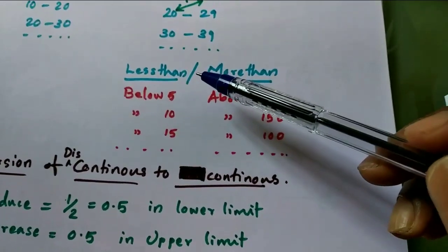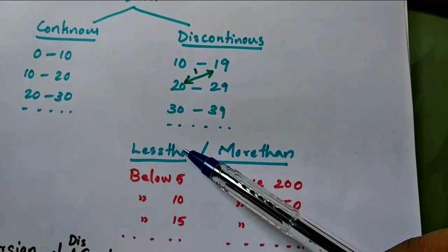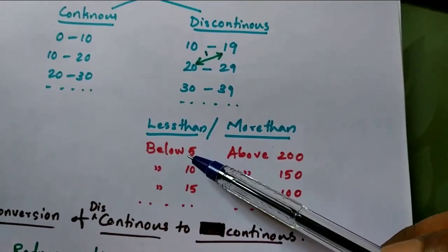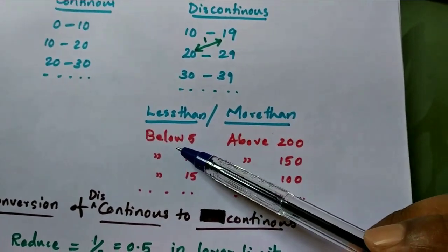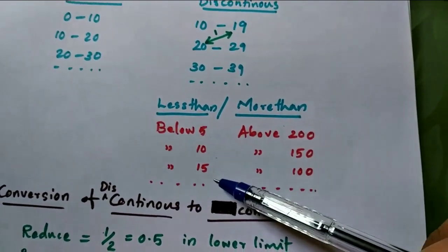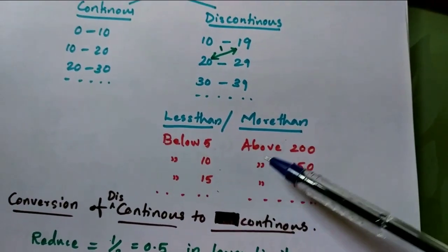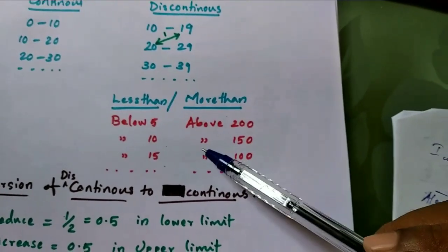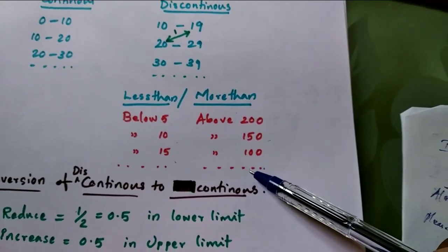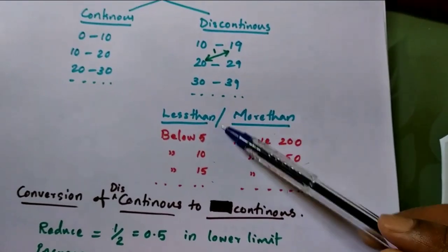Two more types of discontinuous data: one is 'less than' data and the second is 'more than' data. Sometimes the data is given as below 5, below 10, below 15, etc. 'More than' type means above 200, above 150, above 100, etc. These two types are also known as discontinuous data.